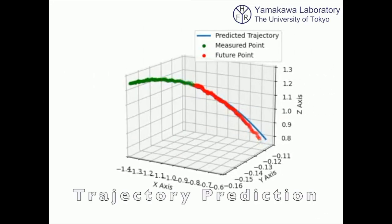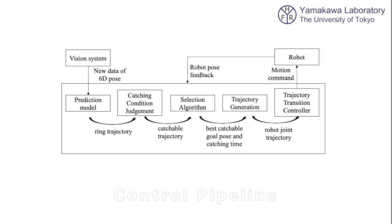Based on the 6D pose information, flying trajectory and orientation variation can be estimated in real-time. Then the best catching point and orientation can be determined.